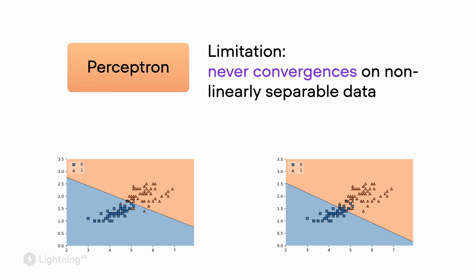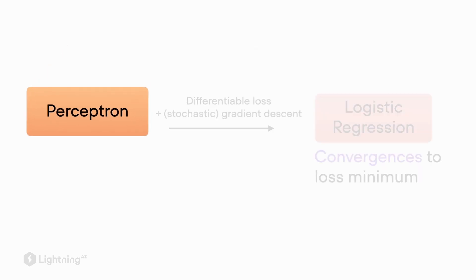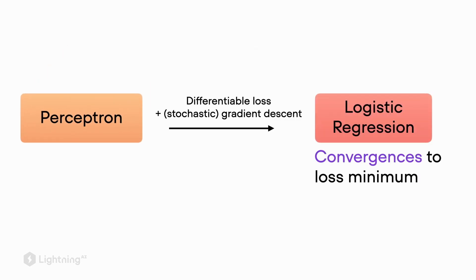It never converges if the classes can't be perfectly separated. To address this issue, we used logistic regression by adding a differentiable loss, which always converges to a loss minimum.